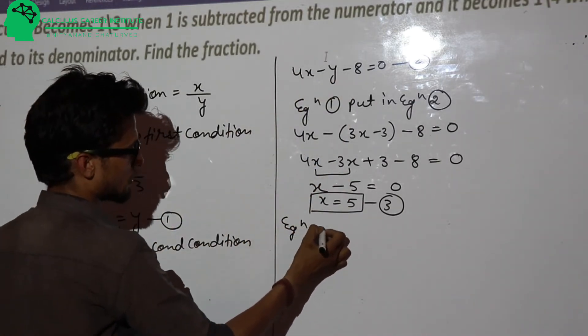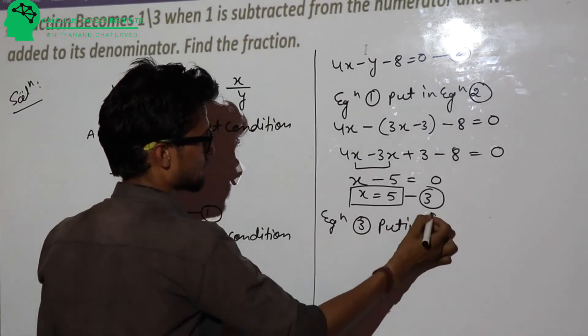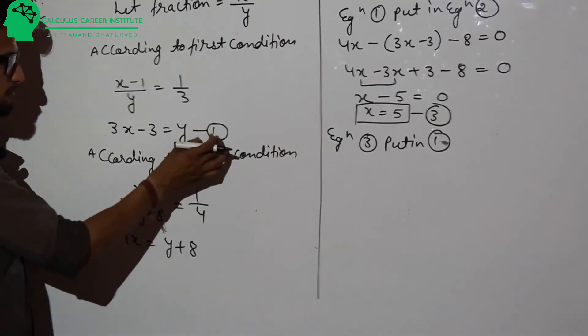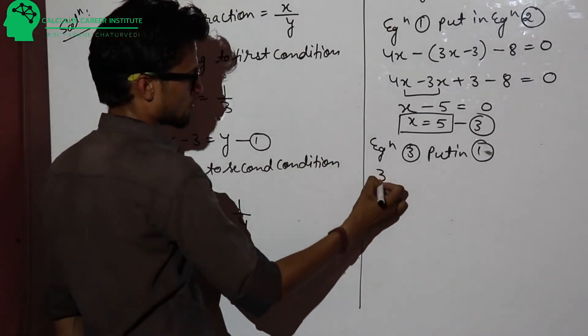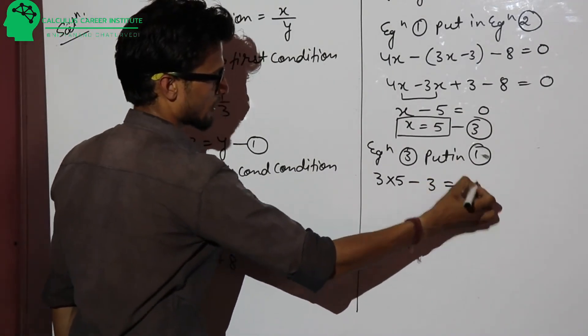Then equation number 3, putting in equation number 1. So 3 times 5 minus 3 is equal to y.